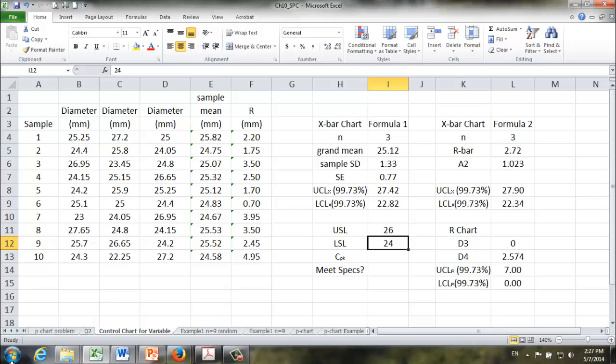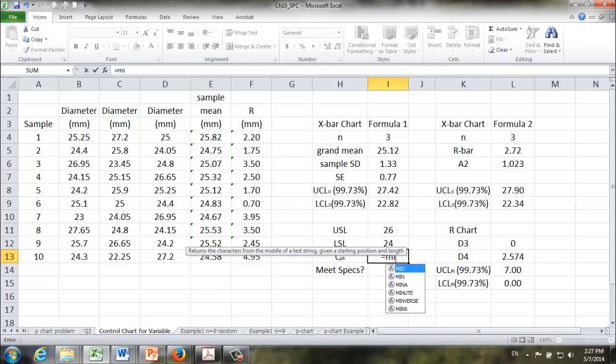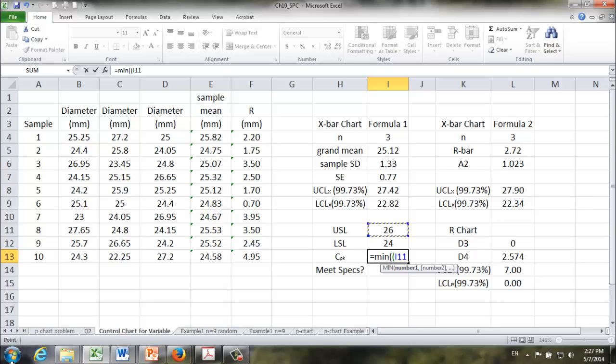Let's see how we can calculate the CpK. It's going to be equal to the minimum value between two numbers. One is upper specification limit minus grand mean divided by 3 sigma.